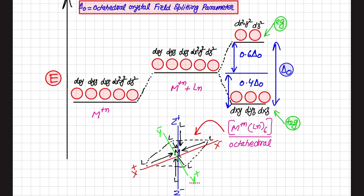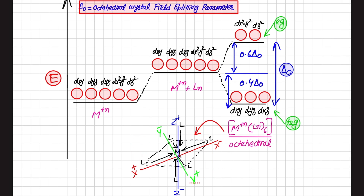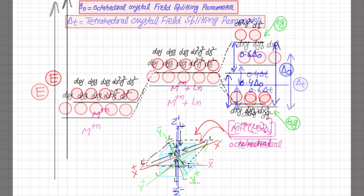The eg and t2g labels are derived based on the symmetry elements present in these orbitals using group theory. The 'g' stands for gerade, meaning center of inversion. In octahedral geometry, if you invert the complex, symmetry is preserved — a center of inversion exists — so g is written for both sets of orbitals. This concludes the octahedral crystal field splitting discussion.